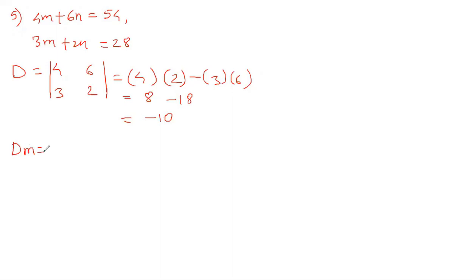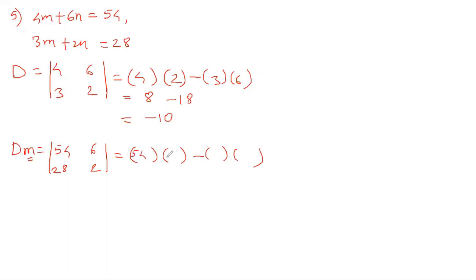Now we find Dm. Instead of m coefficients, we write the constants 54 and 28, with n coefficients 6 and 2 as they are. Solving: 54 times 2 is 108, minus 28 times 6 is 168. So 108 minus 168 equals minus 60.